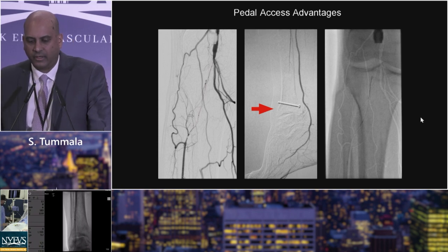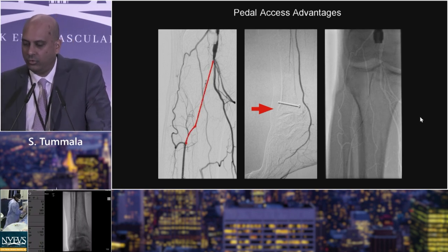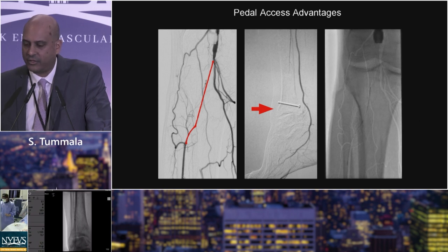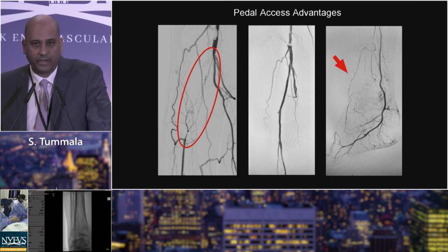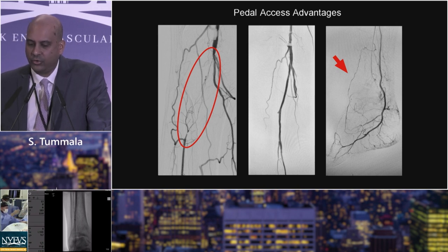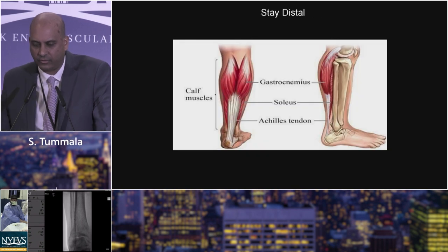As you can see here, this was basically our route, and we were able to cross this CTO in really rapid fashion from below despite having difficulty from above. We were able to achieve inline flow. You can see there's a little stump of an anterior tibial artery on that middle image. But look at the improved perfusion on the lateral foot — a significant advantage there.